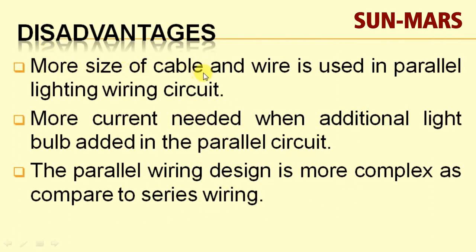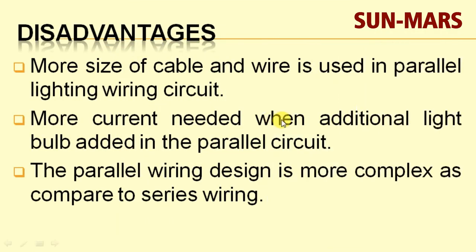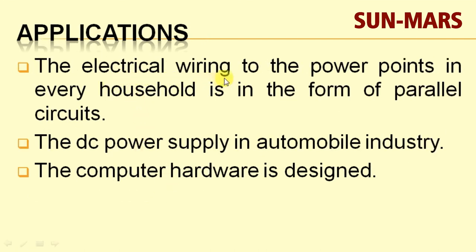A limitation is that larger-size cable and wire are used in parallel lighting wiring circuits. More current is needed when additional light bulbs are added in a parallel circuit. The parallel wiring design is also more complex compared to series wiring.